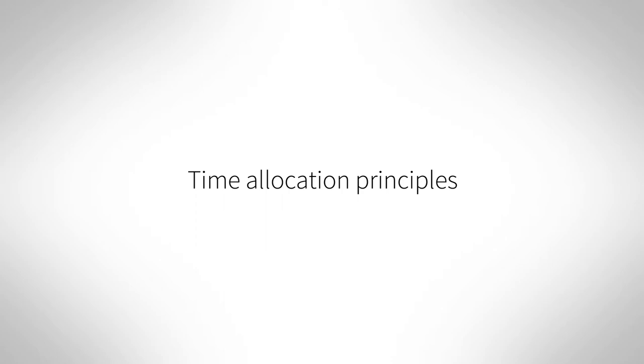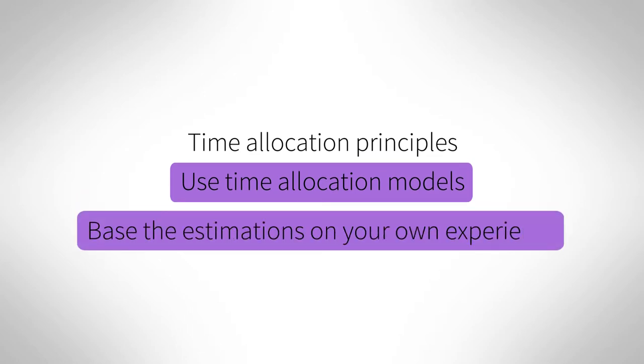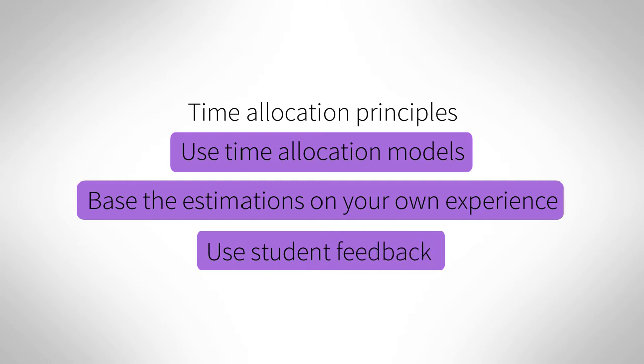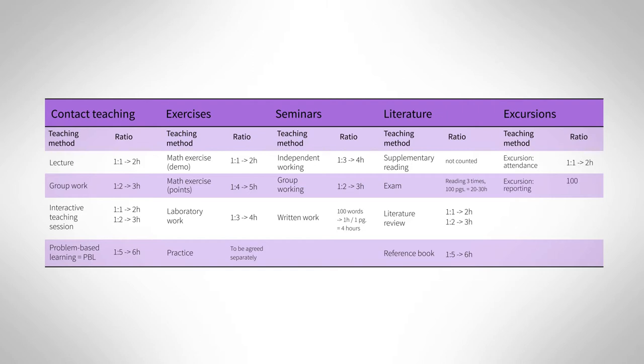When calculating student study time allocation and objective workload for your course, you can use time allocation models based on the teaching and learning activities and assessment methods used. If you have experience in certain teaching and learning activities, your own estimation is as good a basis for study time allocation as the existing time allocation models. However, it is good to collect feedback from the students in either case to be able to adjust the objective workload accordingly. Here you see some examples of how much time should be allocated to certain teaching and learning activities based on one time allocation model.